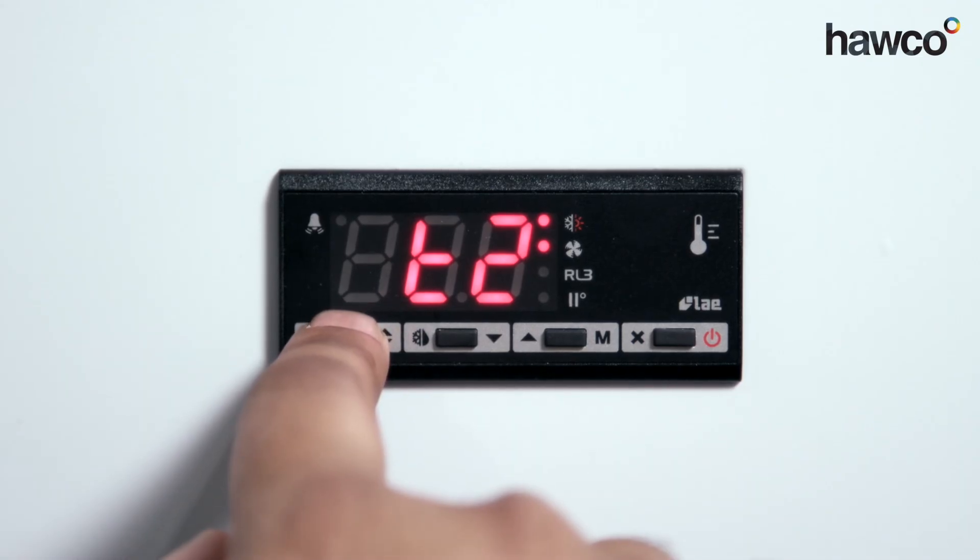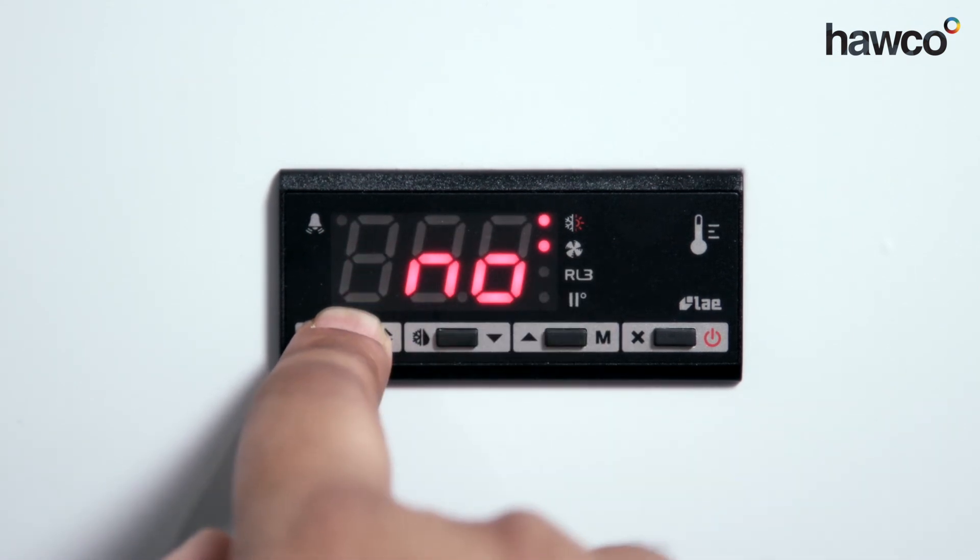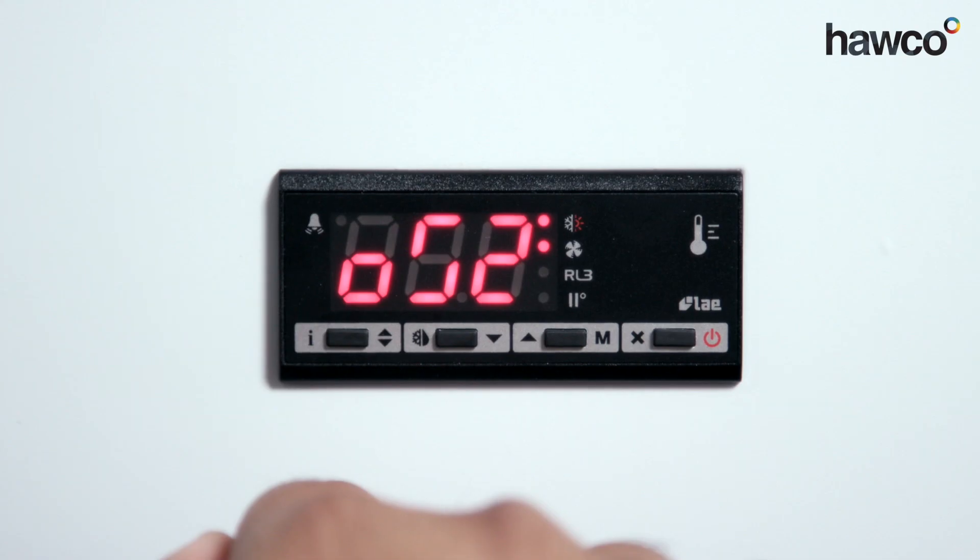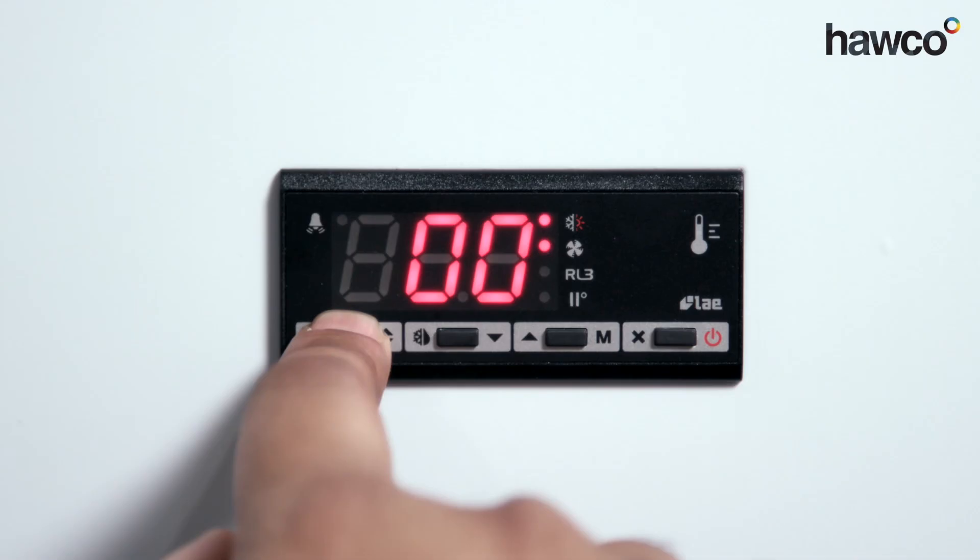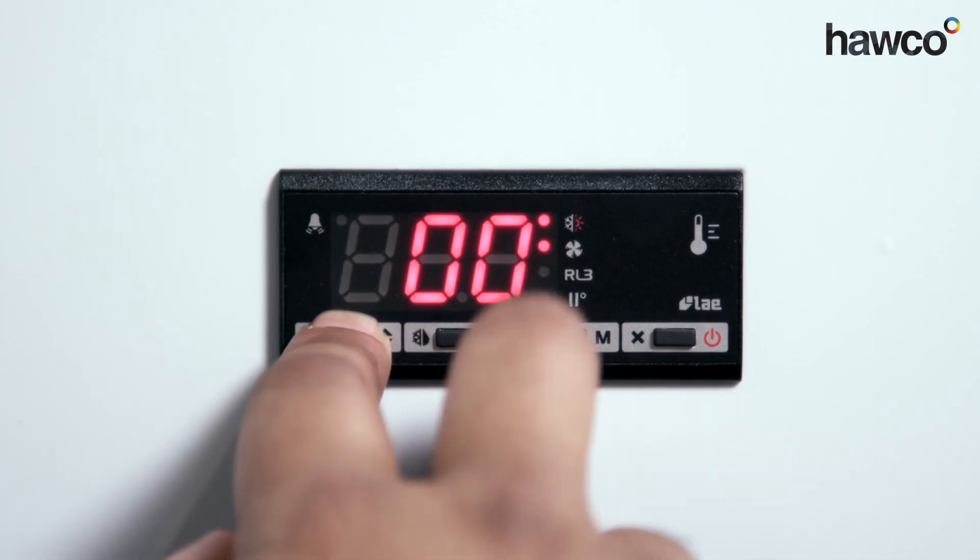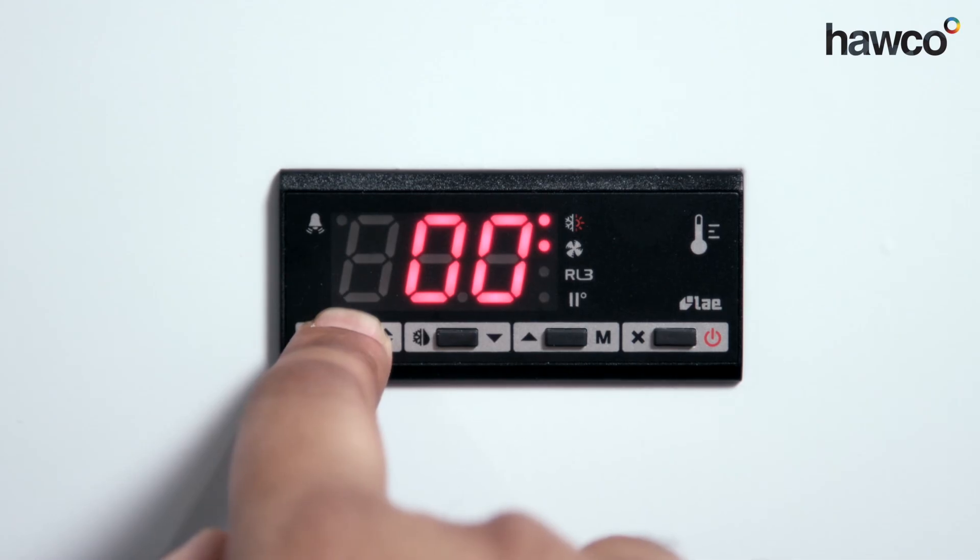T2 is probe 2. On this occasion, we're not using a second probe, so we have to make sure this is set to no. If you put a second probe in without changing this to yes, the second probe will not be active. Next is OS2. If you're using the second probe, you can set the offset at zero. Even if I change this, with the second probe being non-functional, it will not take precedent.